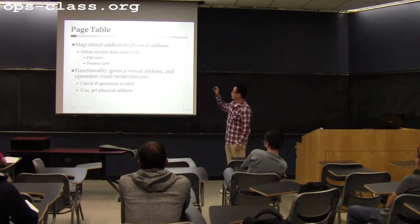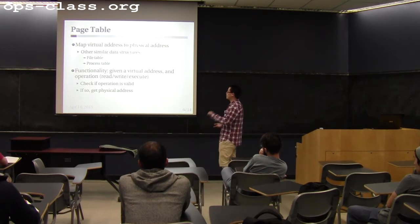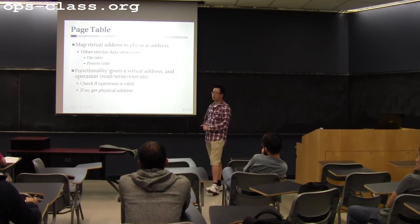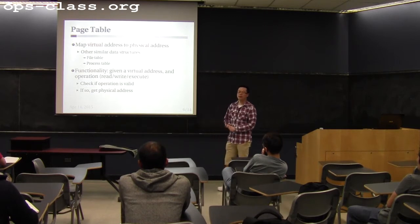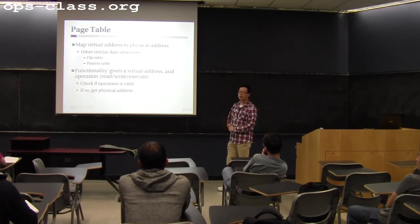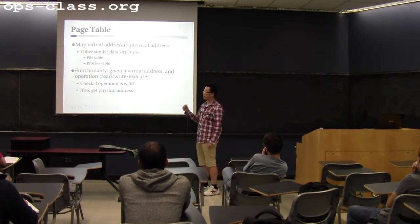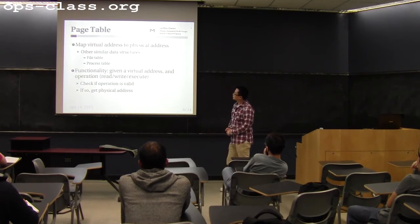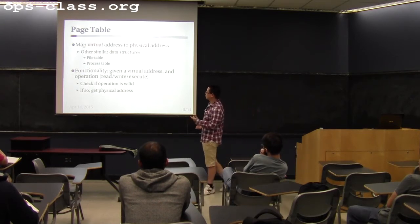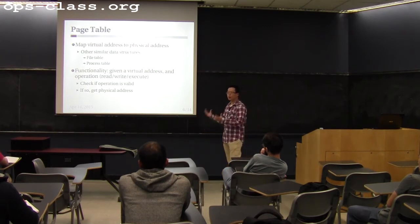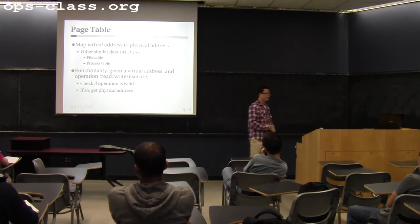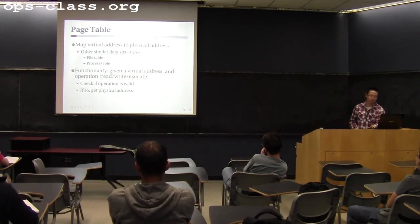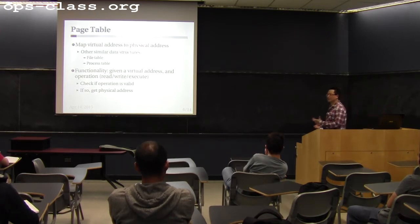For the page table, given a virtual address and an operation, you get two pieces of information in the vm_fault handler: first, whether the operation is valid — for example, if the user wants to write to a read-only page that should be rejected — and second, if the operation is valid, the physical address associated with that virtual address. This is the requirement of the page table. Keep this in mind when designing your actual page table structure.